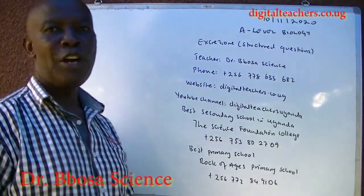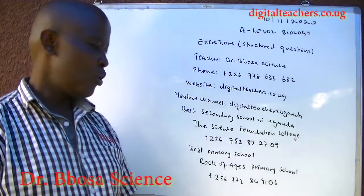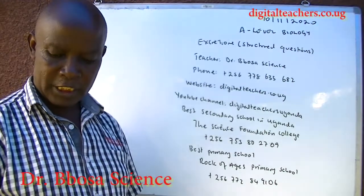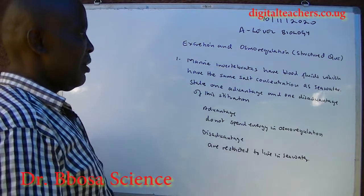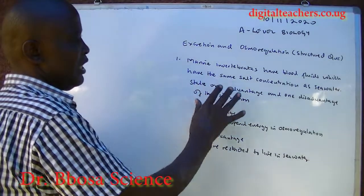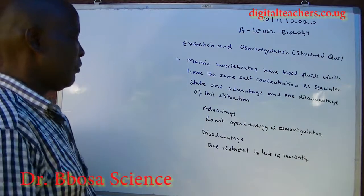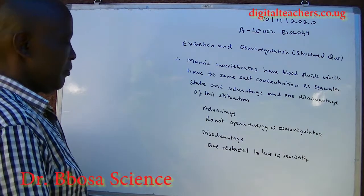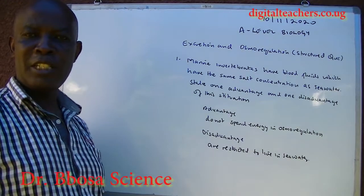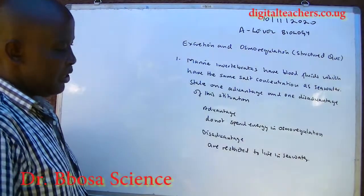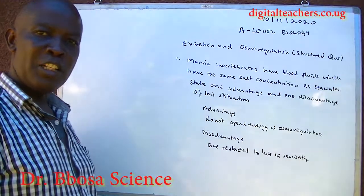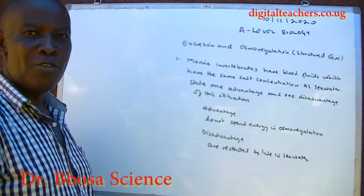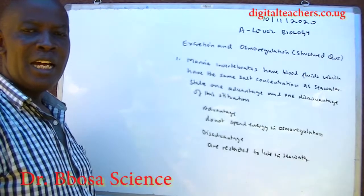Number one: marine invertebrates have blood fluids which have the same sodium concentration as seawater. State one advantage and one disadvantage of this situation. The advantage is that these animals don't spend energy in osmoregulation. The disadvantage is that they are restricted to live in seawater only — they cannot go to fresh water, so they have limited habitats.